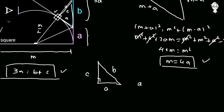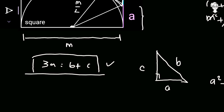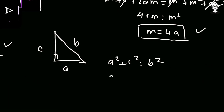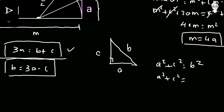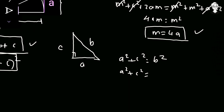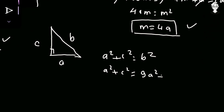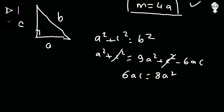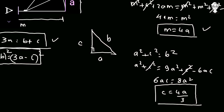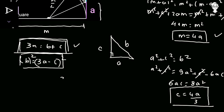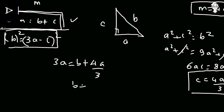Applying the Pythagorean theorem: A² + C² = B². From the equation 3A = B + C, we get B = 3A − C. Substituting: A² + C² = (3A − C)² = 9A² + C² − 6AC. The C² terms cancel, giving 6AC = 8A², so C = 4A/3. Substituting back into 3A = B + C: 3A = B + 4A/3, which gives B = 5A/3.